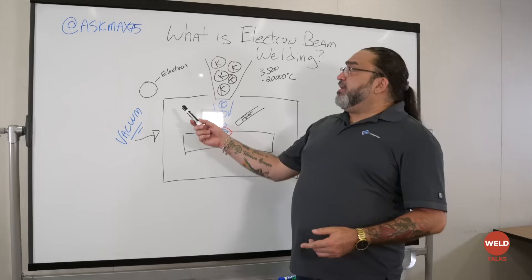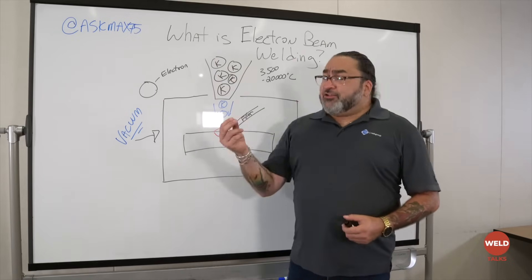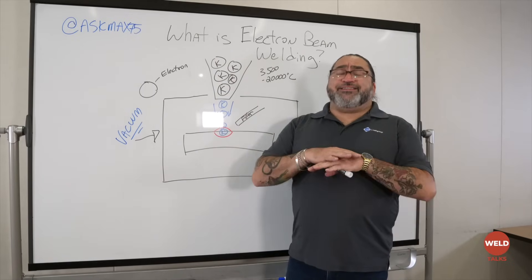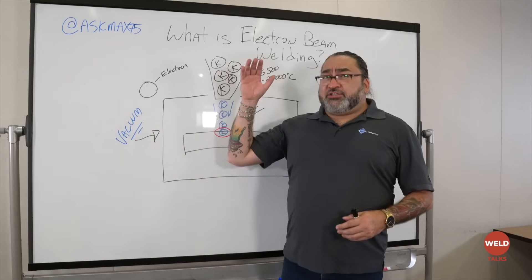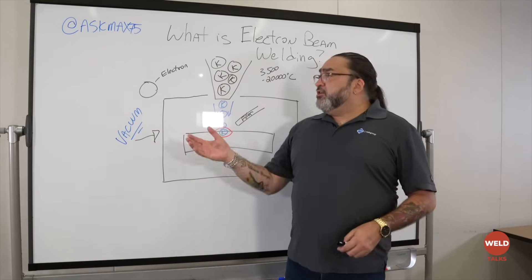All right, so right off the top we need to understand what an electron is. An electron is a particle of energy that exists in everything. They're in every atom, they're a part of every structure of our universe from the Sun to mosquitoes to ourselves to this board.